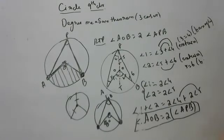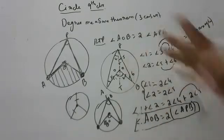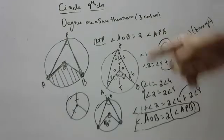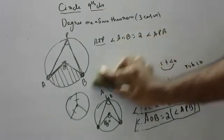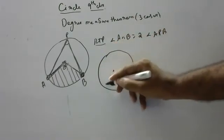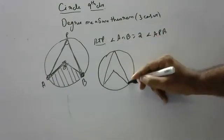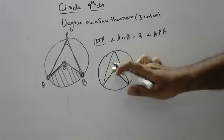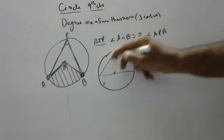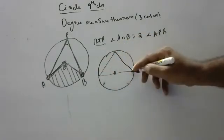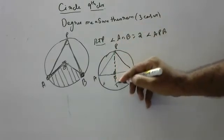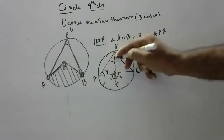Now I am going for Case 2. In Case 1 the lines were like this. In Case 2, I make both lines straight — they both come from the center and coincide to form a straight line. We label: this is O, this is A, this is B, this is P. Angles are again labeled 1 through 6 in the same way.